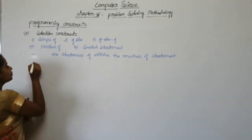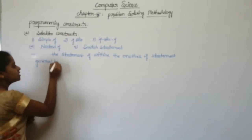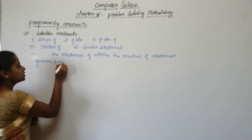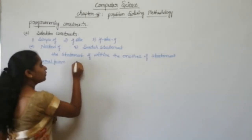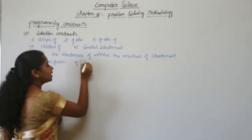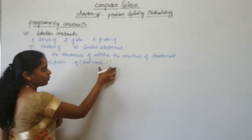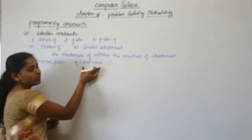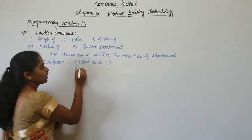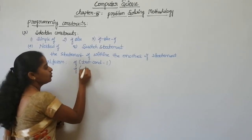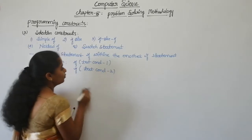The general form for this nested if is: if the test condition one is true, within this if statement another if statement is present — that is if test condition two.